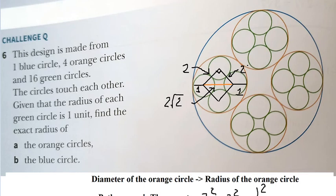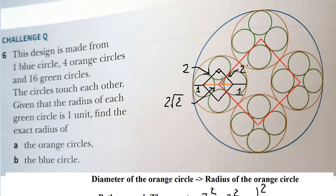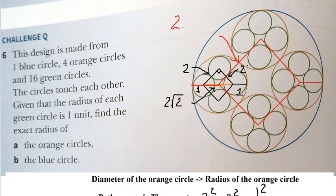Now let's find the big one — the blue circle — using the same technique. From the center, we connect and form a red square using the orange circle centers. This line is the diameter of the orange circle multiplied by two, giving us two plus two times the square root of two, for each side of the red square.